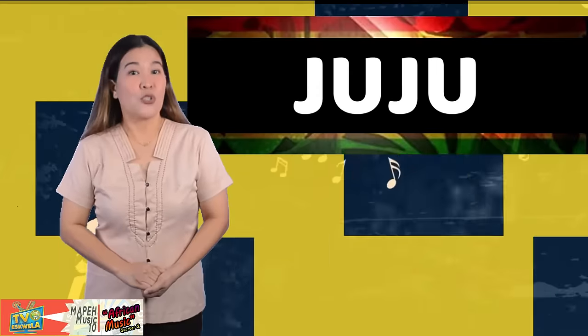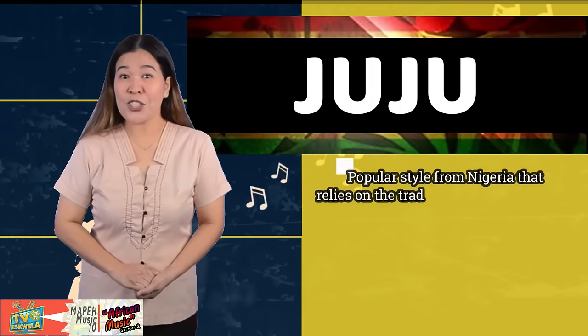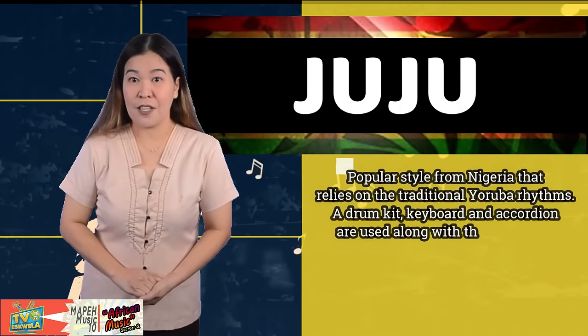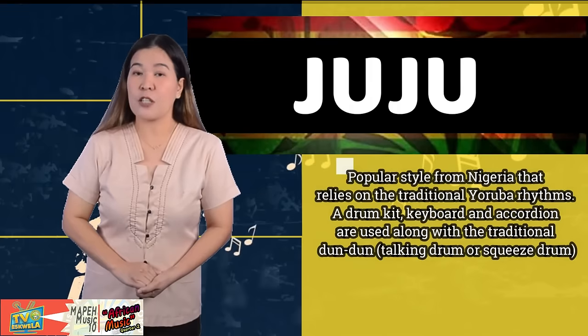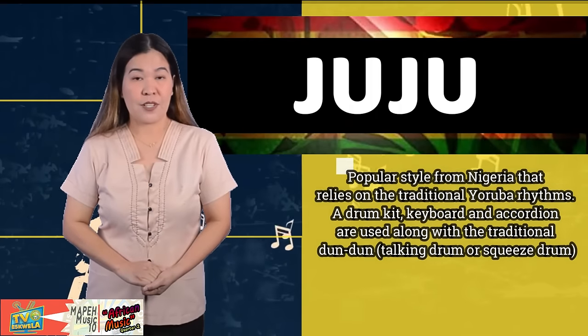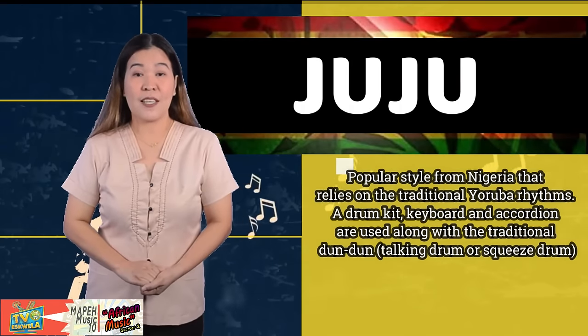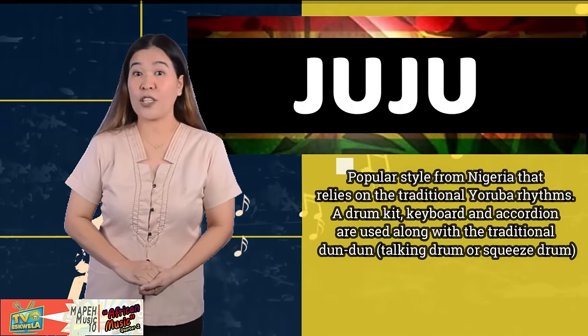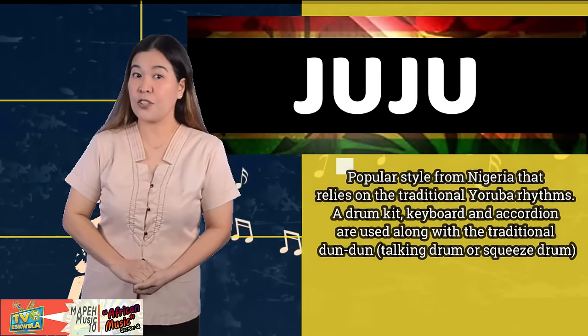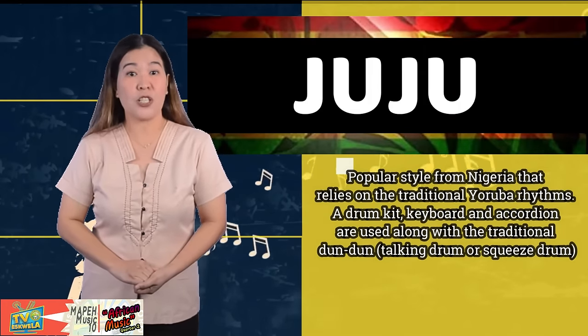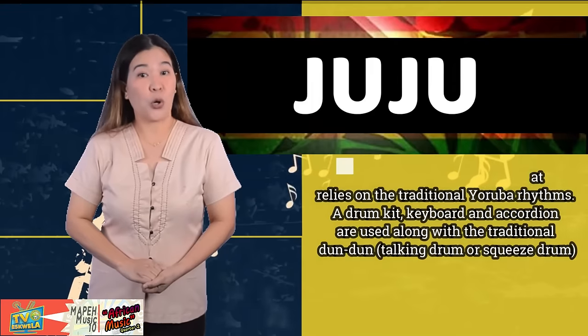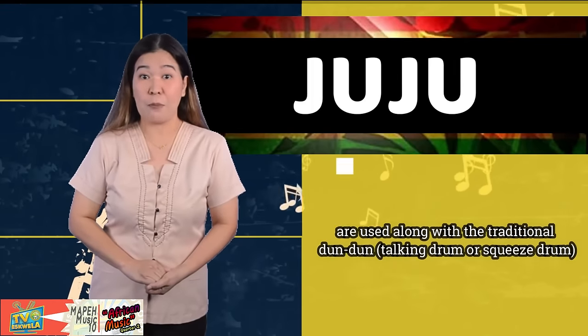Juju is a popular style from Nigeria that relies on traditional Yoruba rhythms. A drum kit, keyboard, and a cordon are used along with the traditional Dundun, also known as the talking drum or squeeze drum.